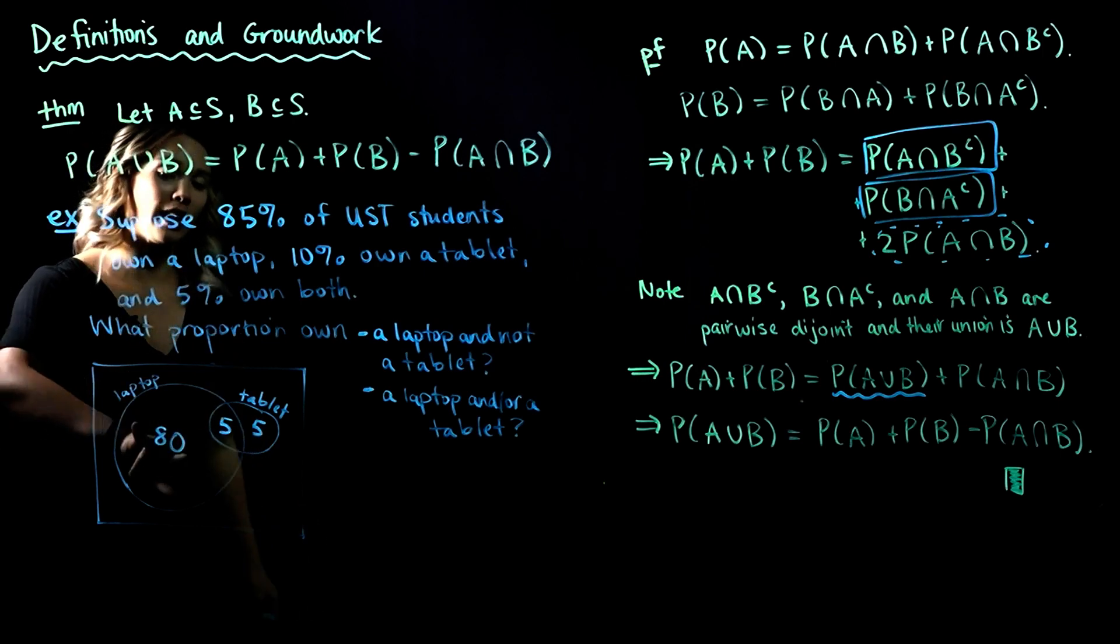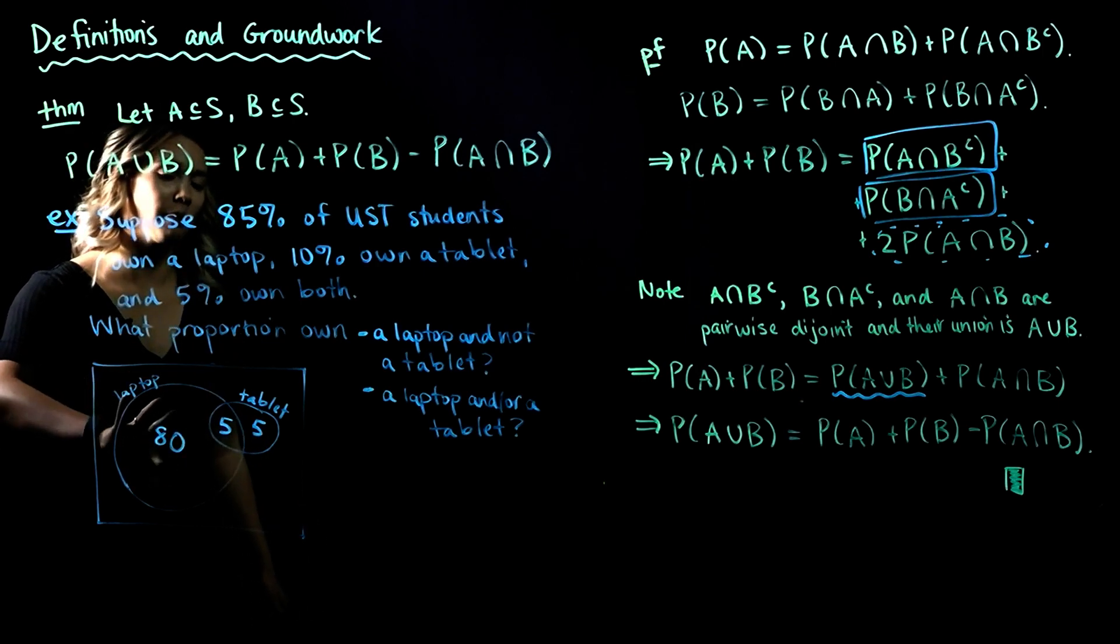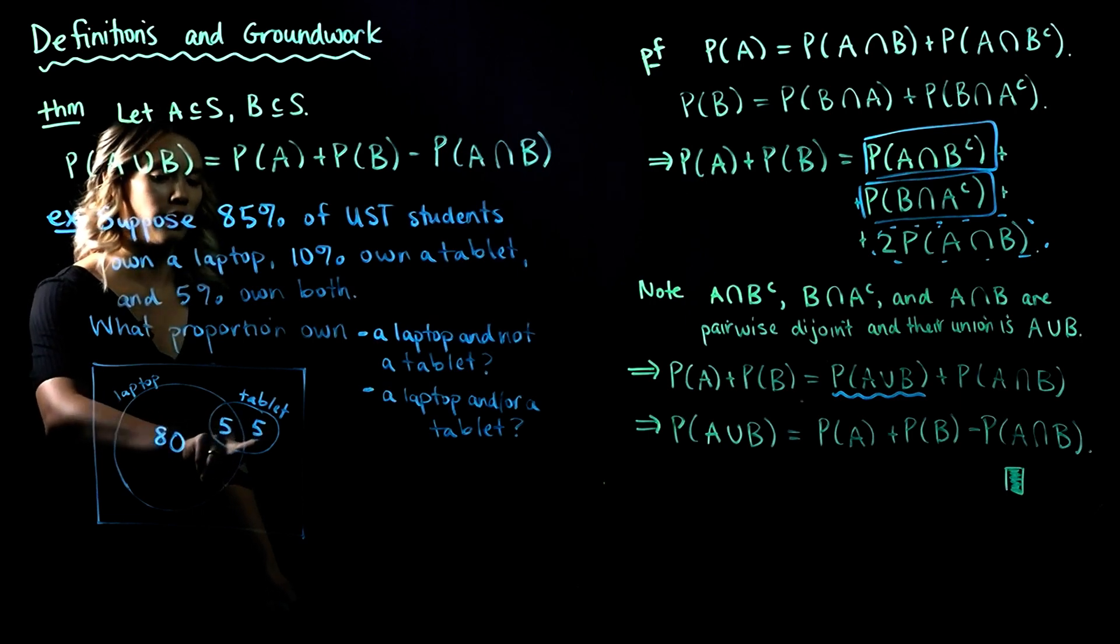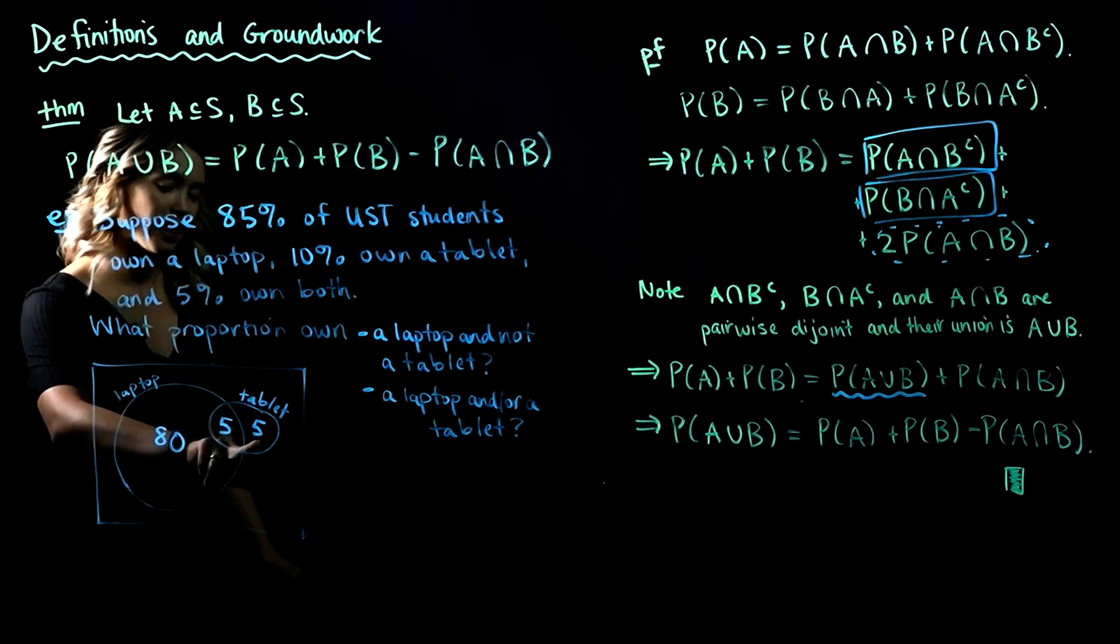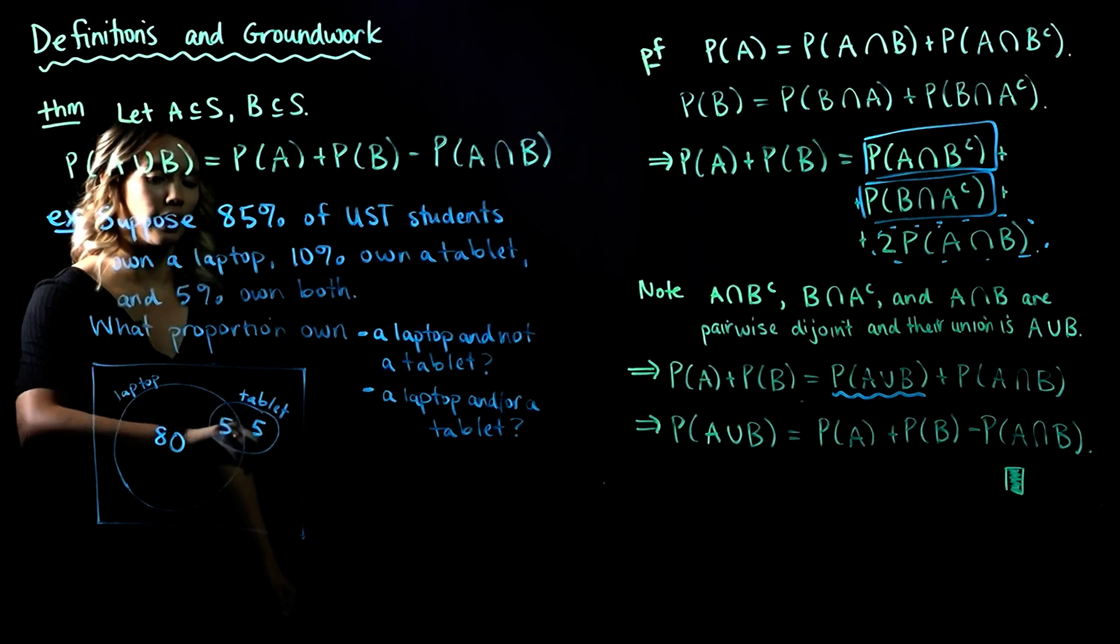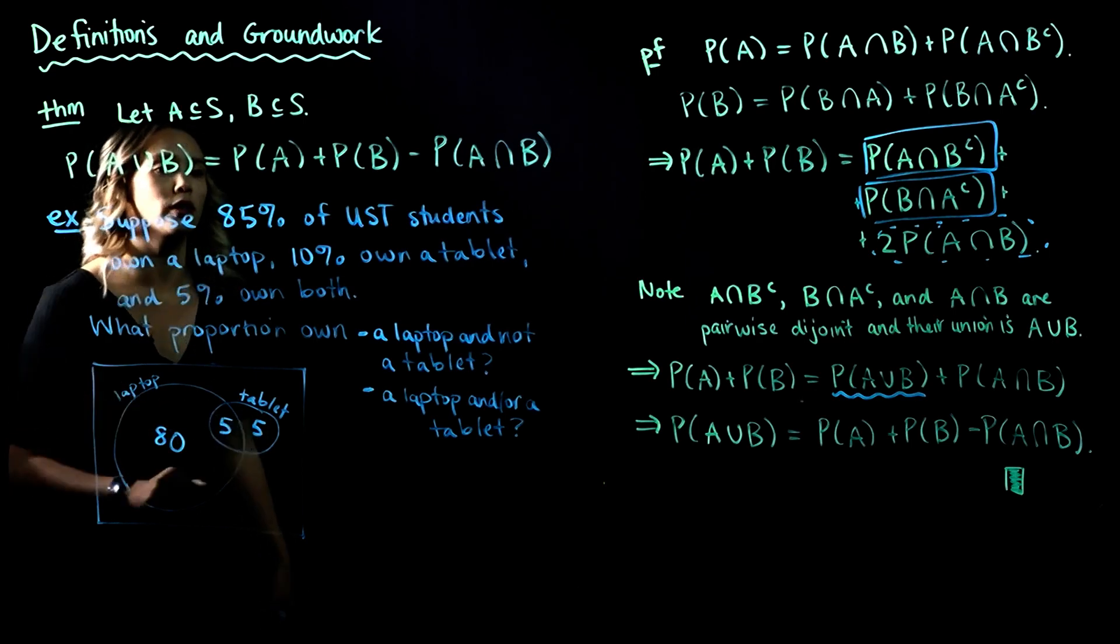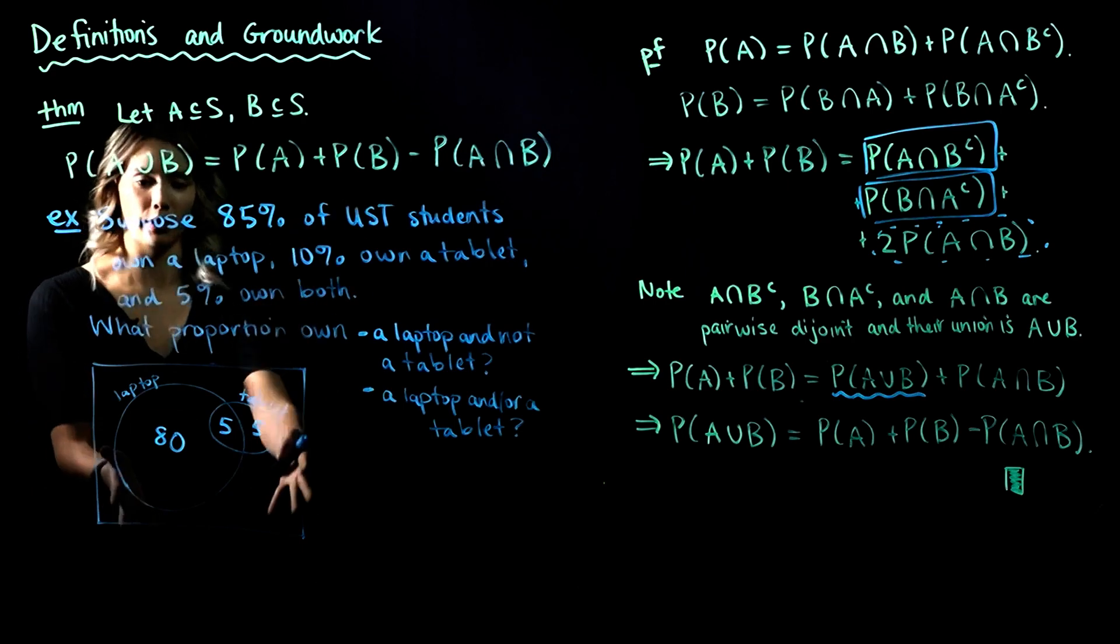All right, so we have 80% on a laptop and not a tablet, 5% own both, 5% own a tablet and not a laptop, and then we can say 85% of students own a laptop, 10% own a tablet. So we've checked our work, and everything works out here.